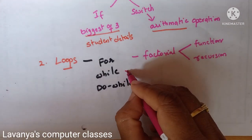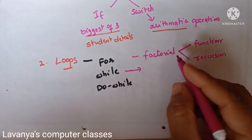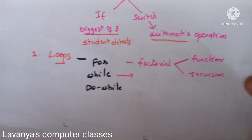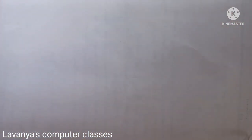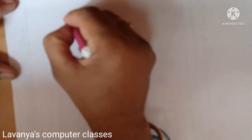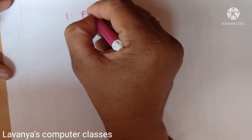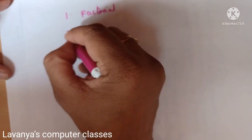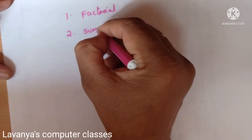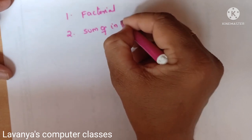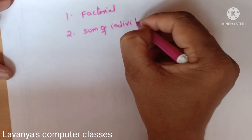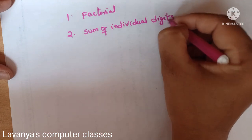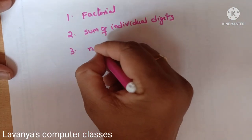Some more important programs in loops — whether it is while loop or for loop — are: factorial of a given number, and sum of the individual digits. For example, take 123; the sum of individual digits is 1 plus 2 plus 3. That program is also important.